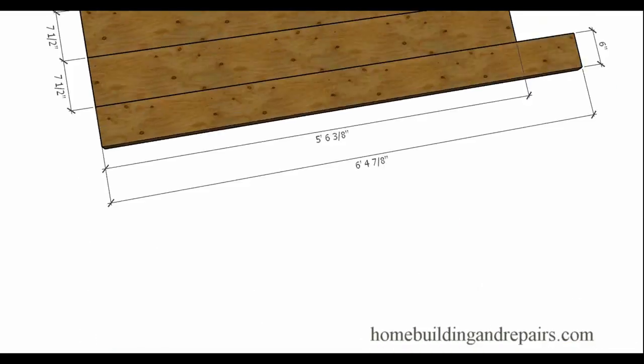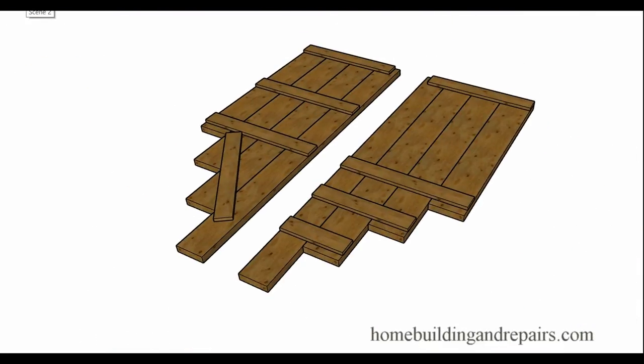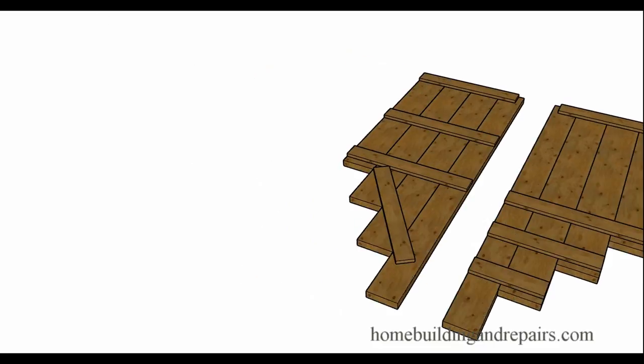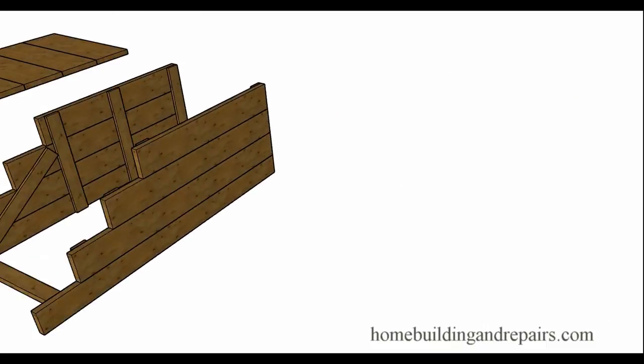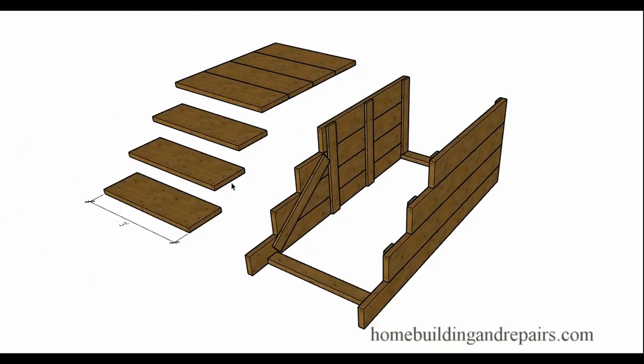You can always reverse the process of how to assemble it. Just come back and go backwards like this. This is the first part that you are going to put together. Then you will stand them up and you will connect them with the bottom 2x4s or the treads, and then you will finally install this section in here and you are done. Simple and easy.